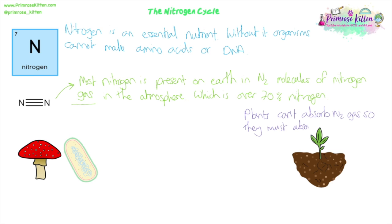Nitrate means it involves oxygen — nitrogen combined with oxygen compounds from the soil. Nitrates are one of the mineral ions absorbed from the soil through active transport. The amount of nitrate in the soil that plants have access to determines how well they grow. They use active transport and take it in through the roots, because nitrogen is really important for growth.